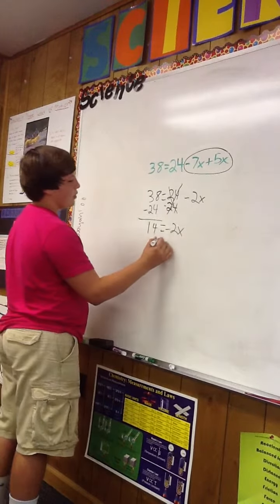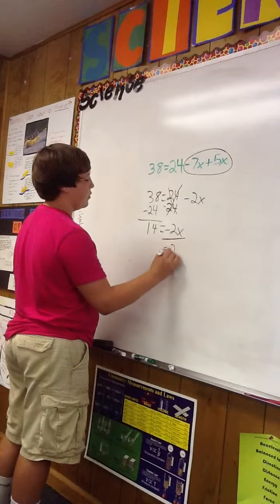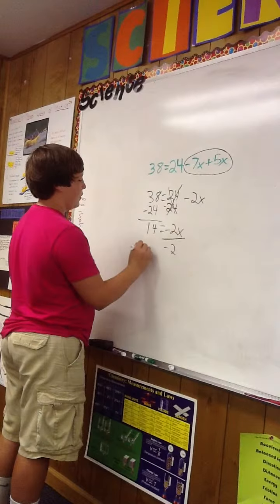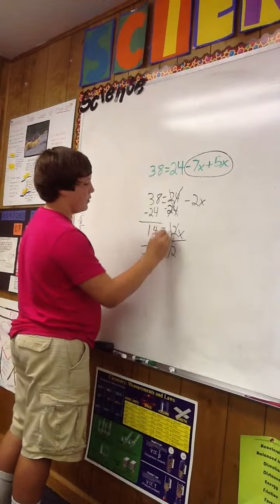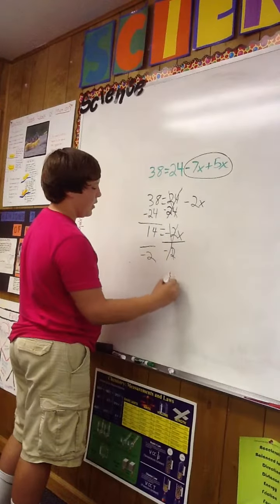Then I have to divide by negative 2 on both sides. These two cancel out, and that leaves you with x.